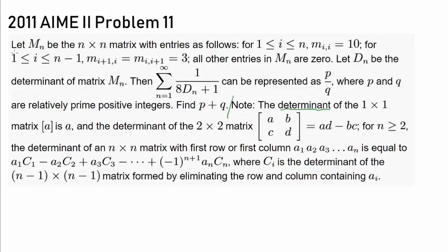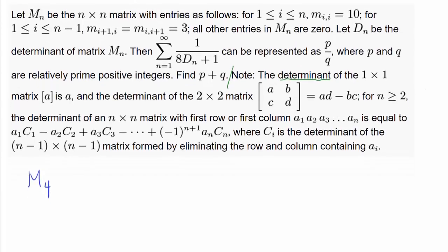Now let's actually get started. Let M sub n be the n by n matrix with entries as follows. For i between 1 and n inclusive, M sub i comma i is 10. For i between 1 and n minus 1 inclusive, M sub i+1 comma i is equal to M sub i comma i+1 is equal to 3, and all the other entries in the matrix are 0. Before going on, let's try to think about what M sub 4 looks like. Once we know how to draw this matrix, we should be able to find any other matrix in this form. We know all the entries in the main diagonal — M sub i comma i is 10.